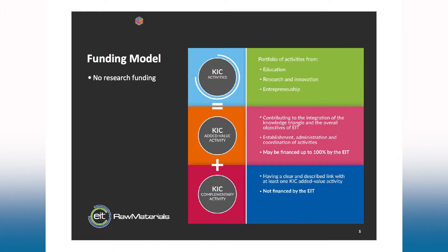A KIC activity requires members to bring what we call KIC complementary activities — proof that they have already invested in programs on education, technology, and research. EIT will then provide some support. The general ratio is you bring 75% and EIT will bring 25%, but this is financed at 100%, enabling scaled activities in different fields.